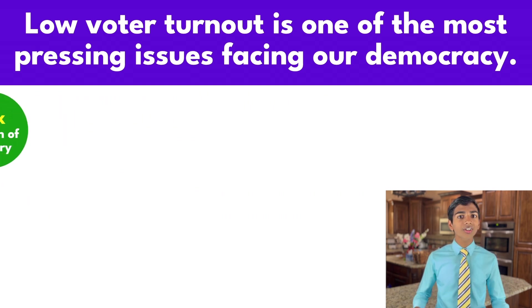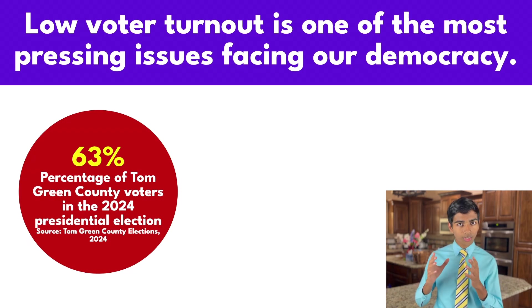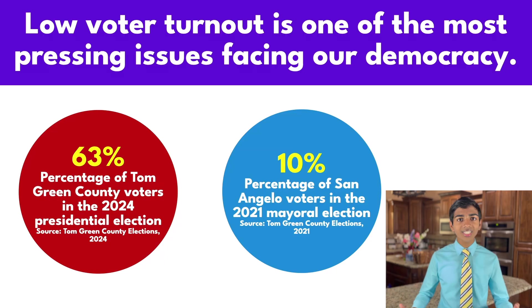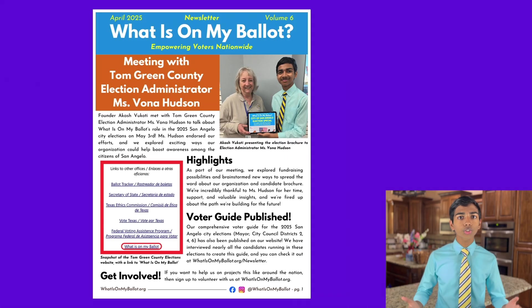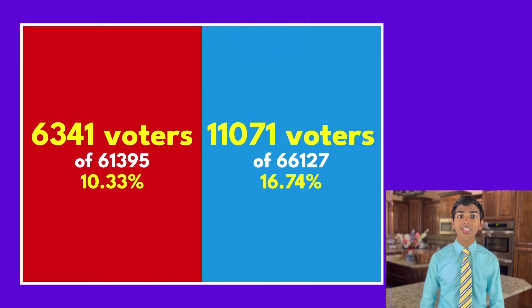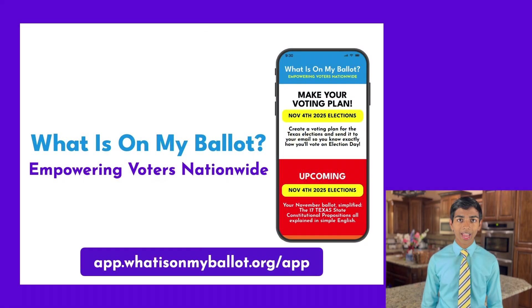For example, in our city of San Angelo, around 63 percent of the electorate voted in the 2024 presidential elections. However, just 10 percent of that same electorate voted in the mayoral election back in 2021. So when What is on My Ballot conducted interviews with all the mayoral candidates in 2025 to create a simple voter guide, we helped contribute to an election where the number of voters nearly doubled. That's when I saw the power of clear information and why I designed this app.